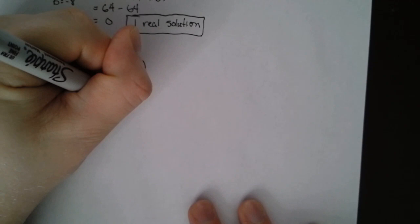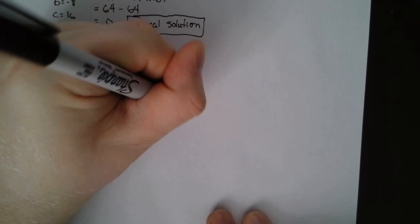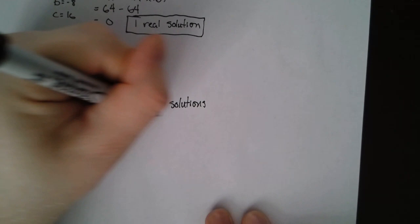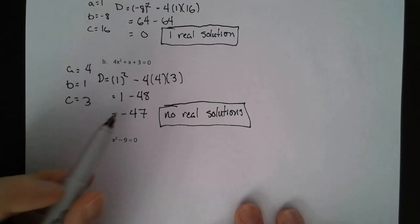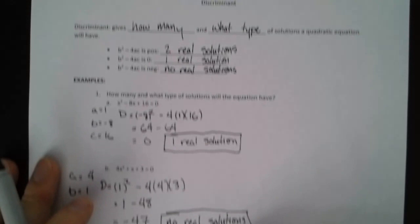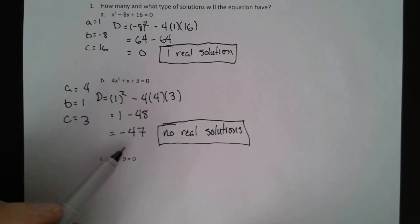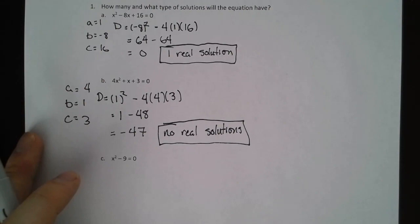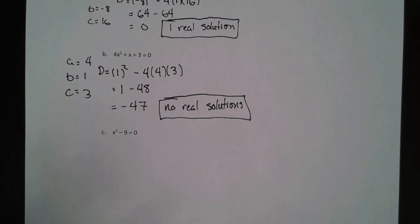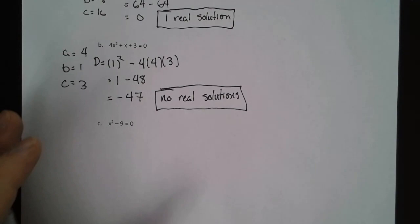So when we have a negative discriminant, that is no real solutions. And if you think about it, the reason for that is because in the context of the quadratic formula, this discriminant piece is underneath the square root. So if we have a negative underneath a square root, we are not going to be able to get any solutions. We can't multiply a real number by itself to get a negative output. So that is why when the discriminant is negative, we have no real solutions.